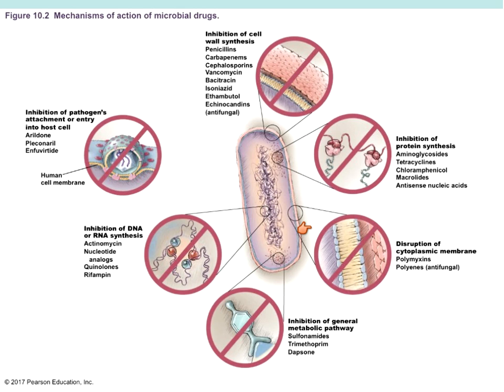Disruption of the plasma membrane is another class of drugs targeting cell structure — polymyxins are very good for that. Inhibition of general metabolic pathways using dapsone and sulfonamides prevents metabolism. One of the big goals of metabolism is to make energy, so if the microbe is unable to make energy effectively, the cell will die.